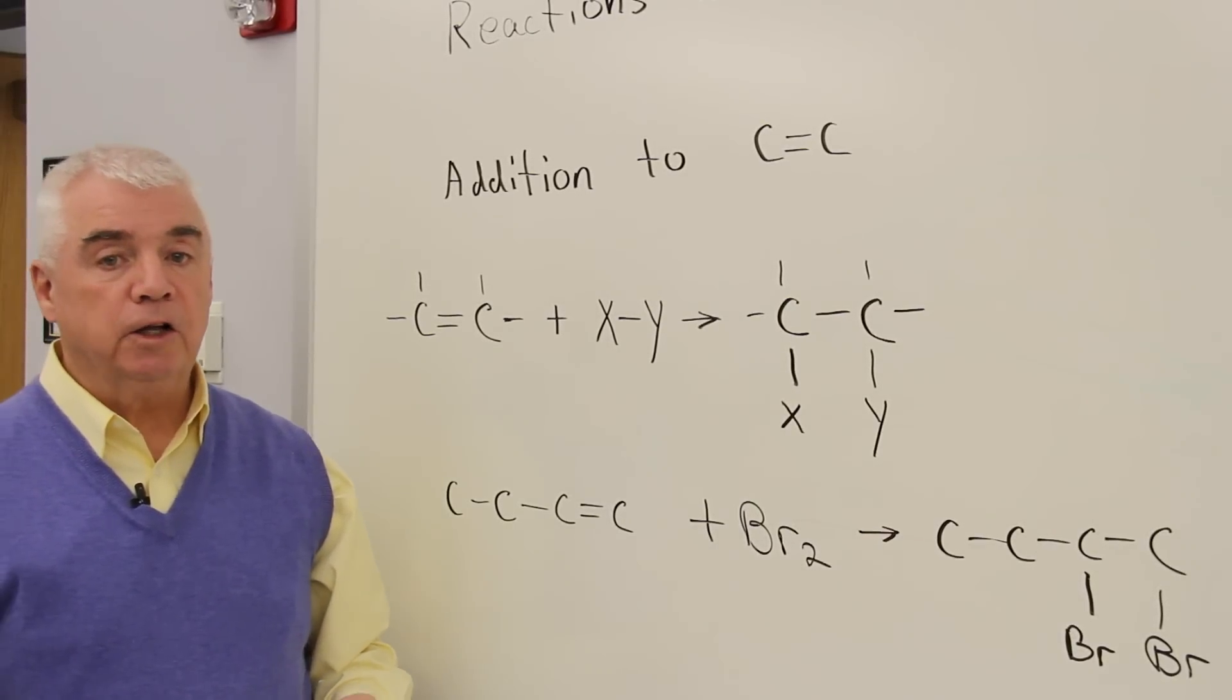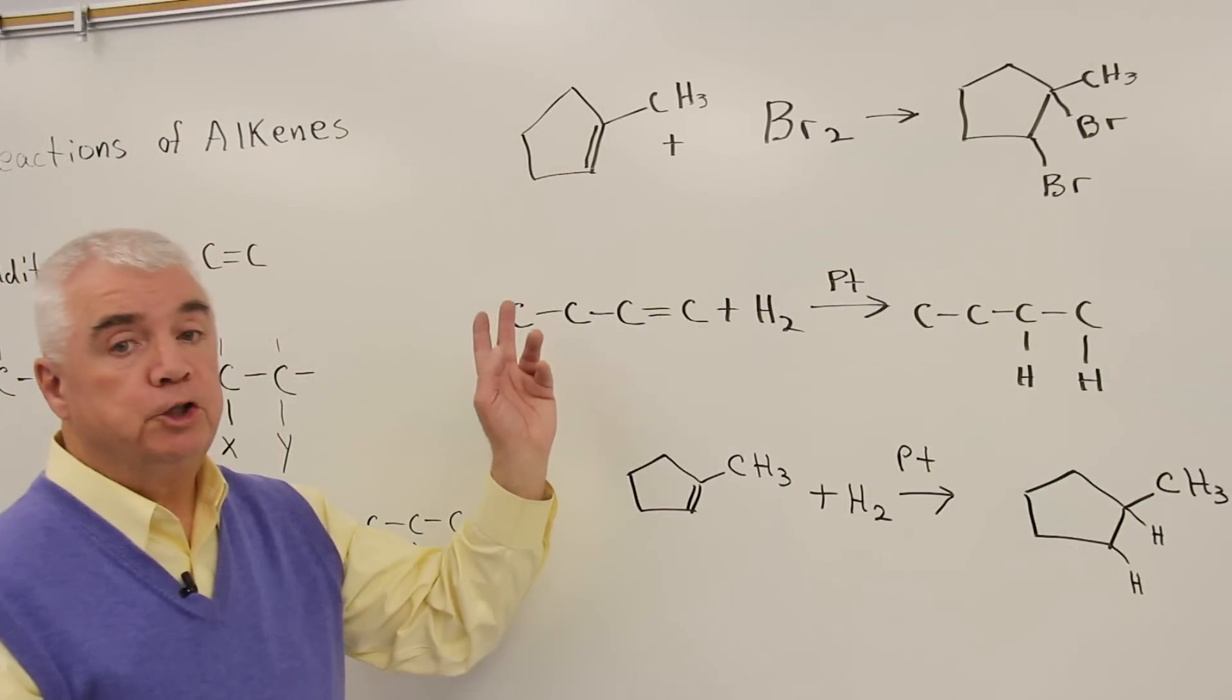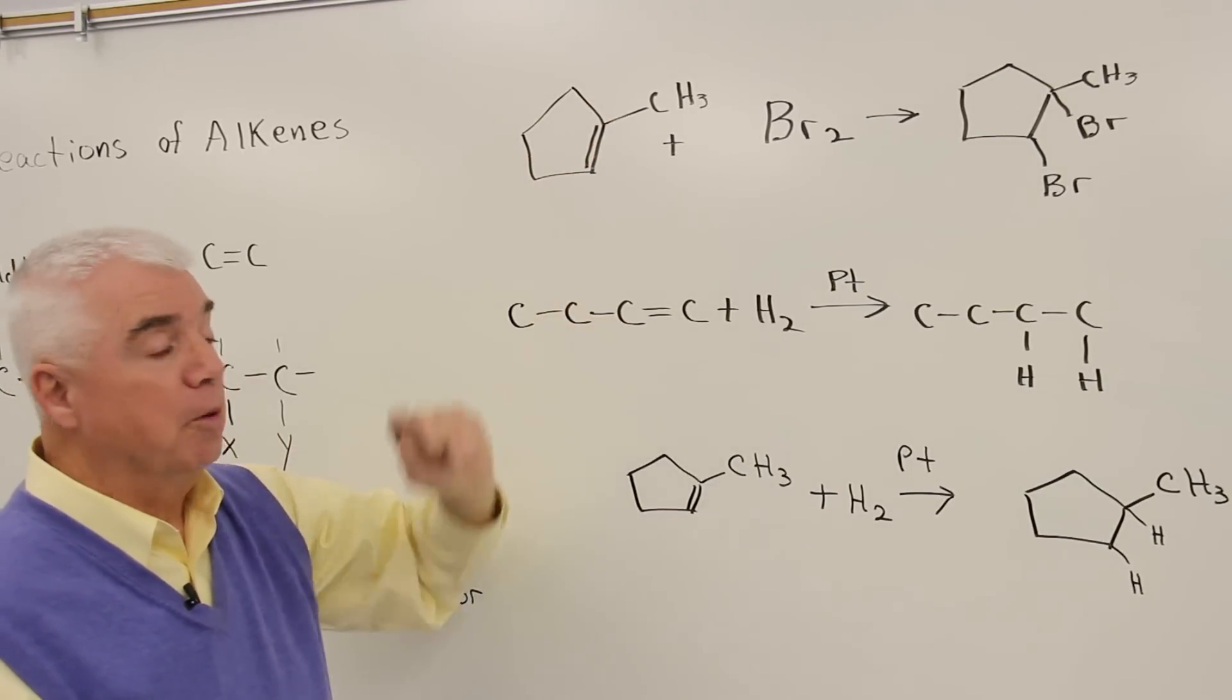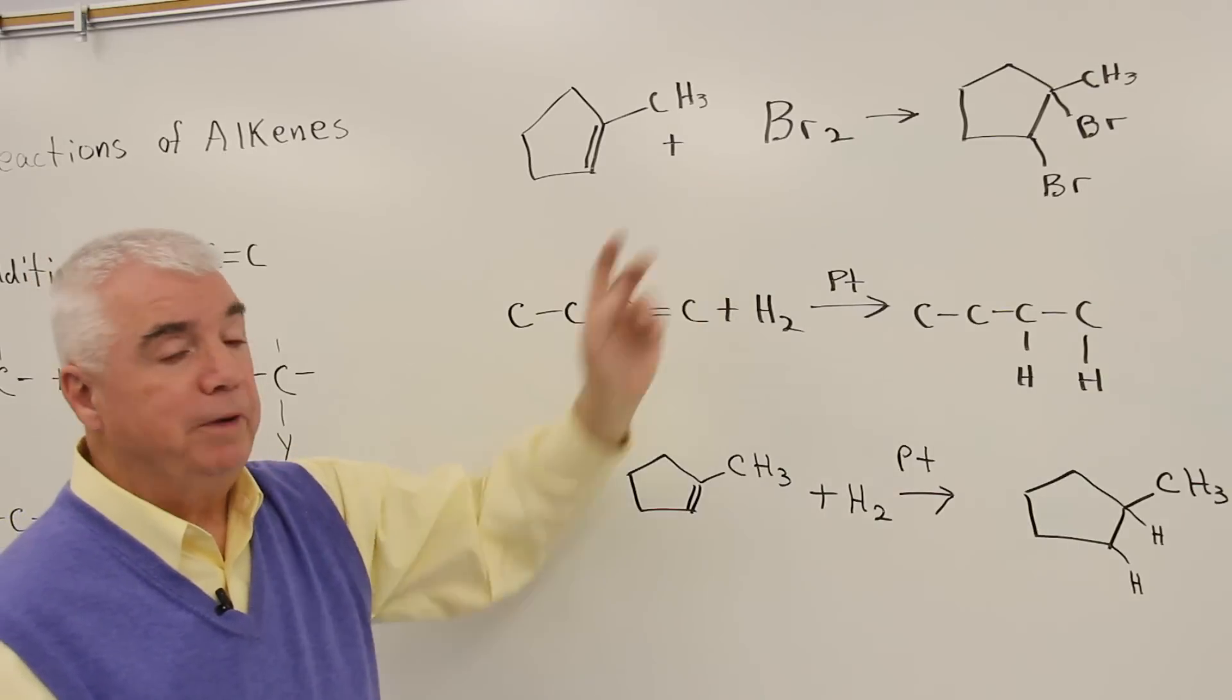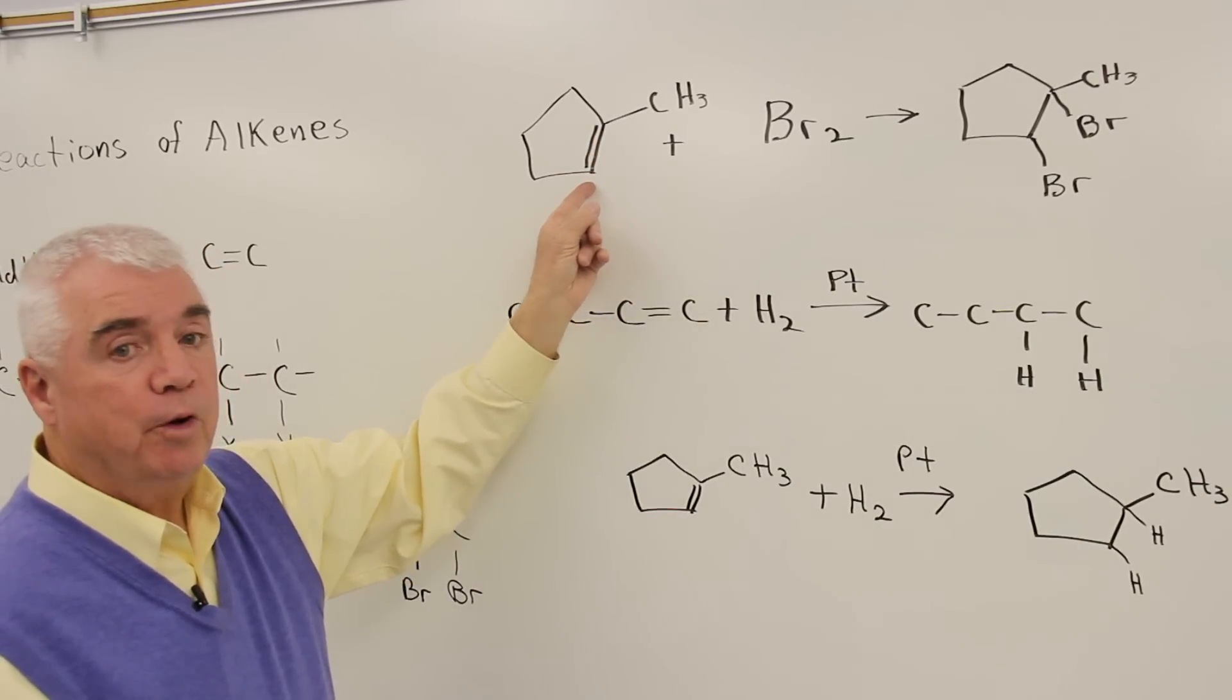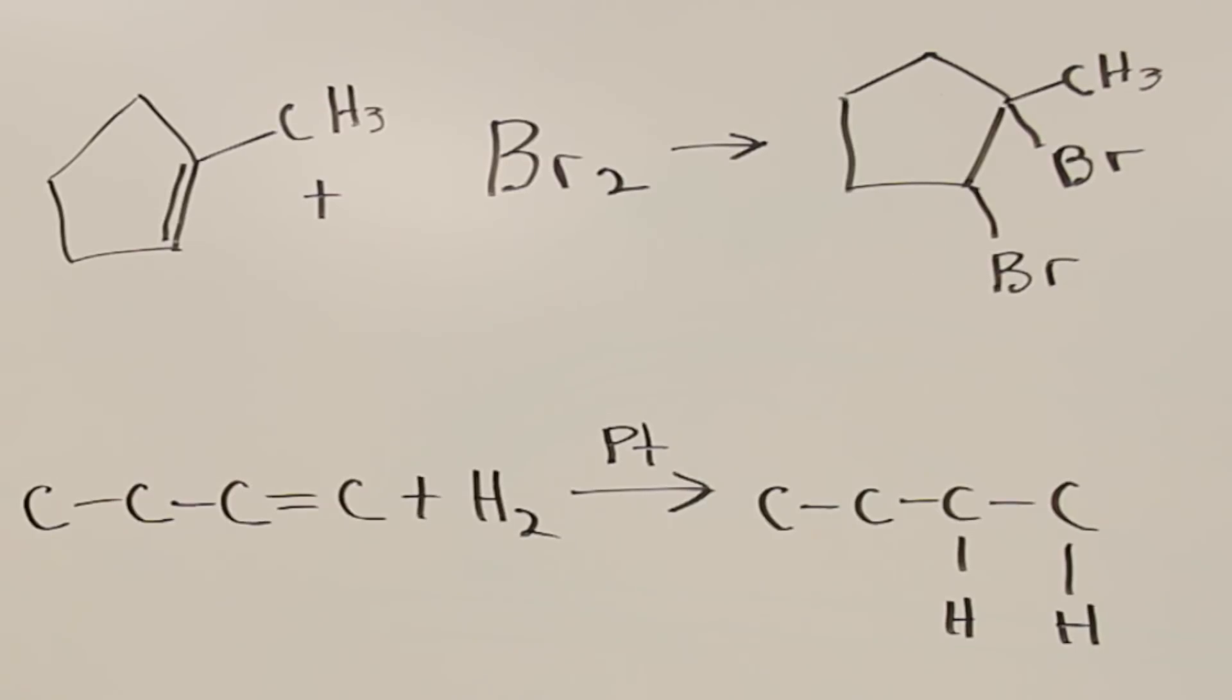Let's look at a cyclic structure and carry out the same reaction. Just like open chain structures, cyclic rings with a carbon-carbon double bond can add bromine to them. Here's our double bond. One carbon is going to pick up the bromine. The other carbon is going to pick up the other atom of bromine, and the double bond disappears.